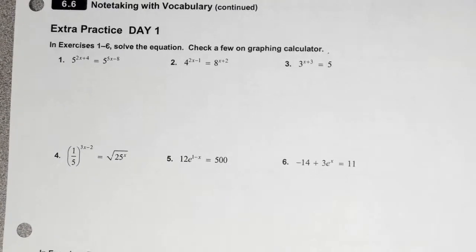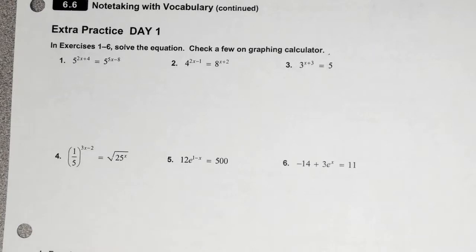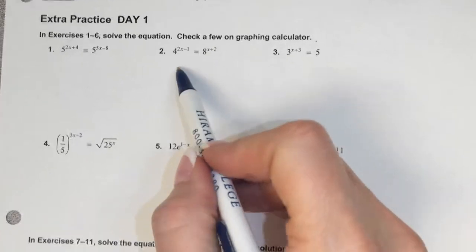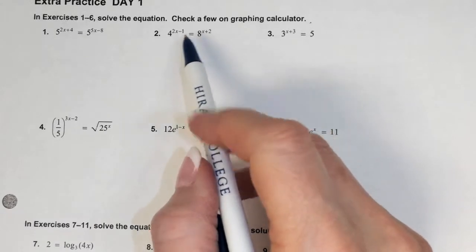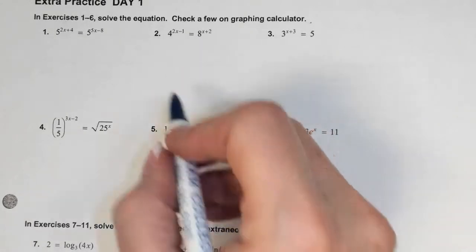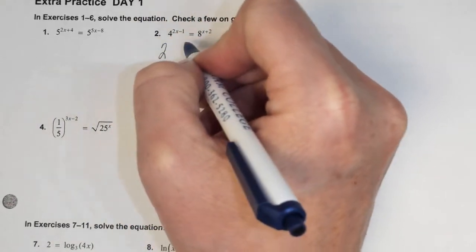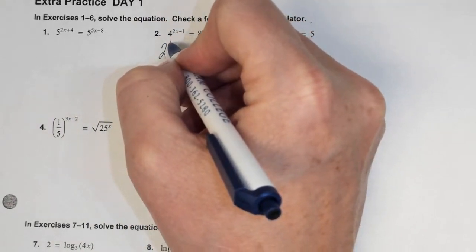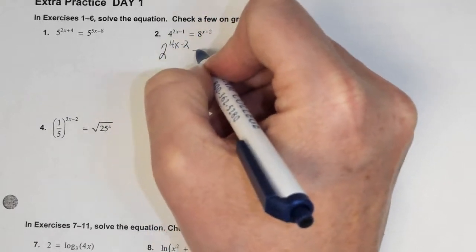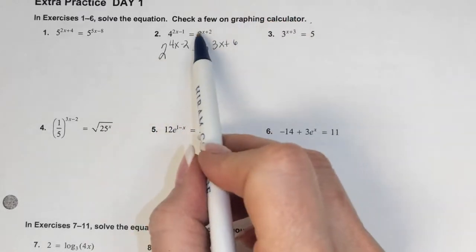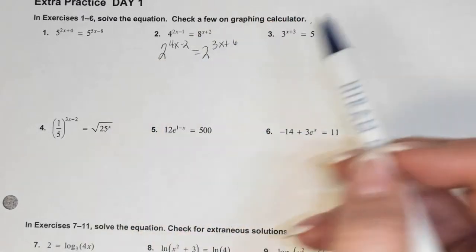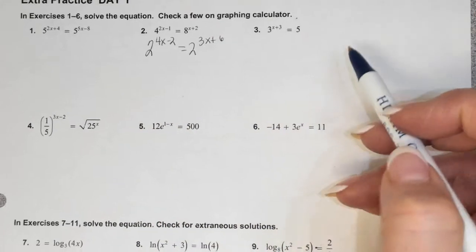Let's check out the extra practice problems. For number one, Zack, how would we do it? And number two, Karen, what would we do? Make sure you distribute that exponent through — we're not going to solve it completely, but distributing the exponent is the correct approach when you can get like bases.